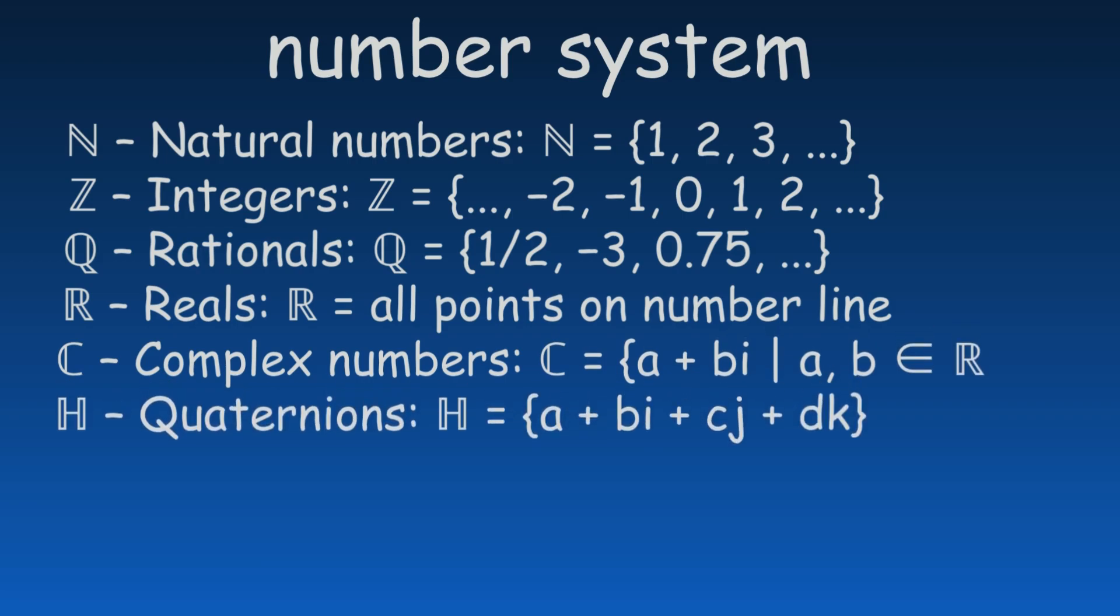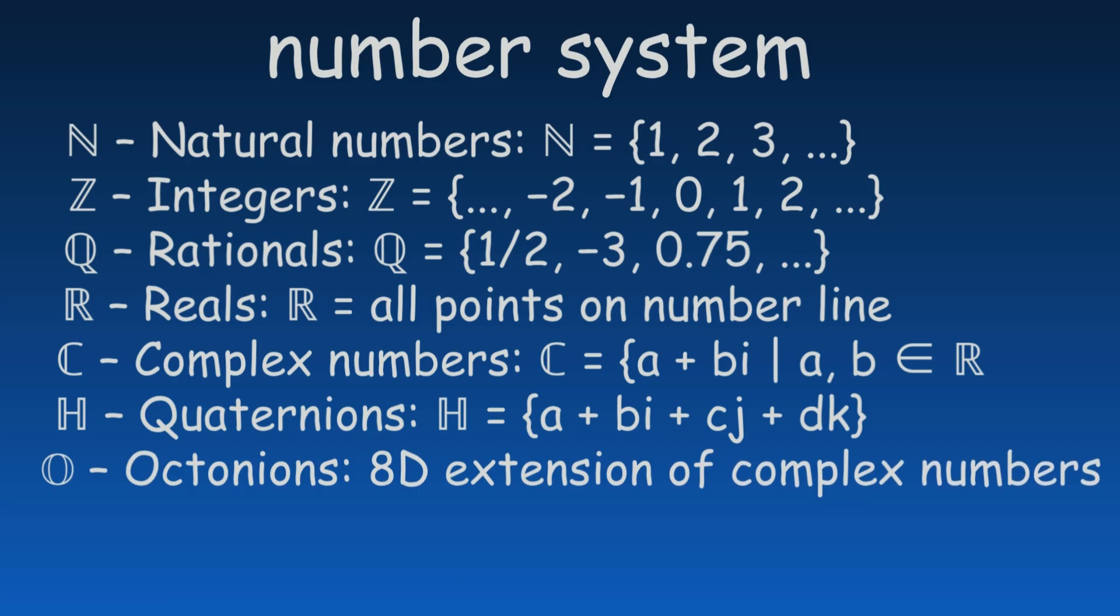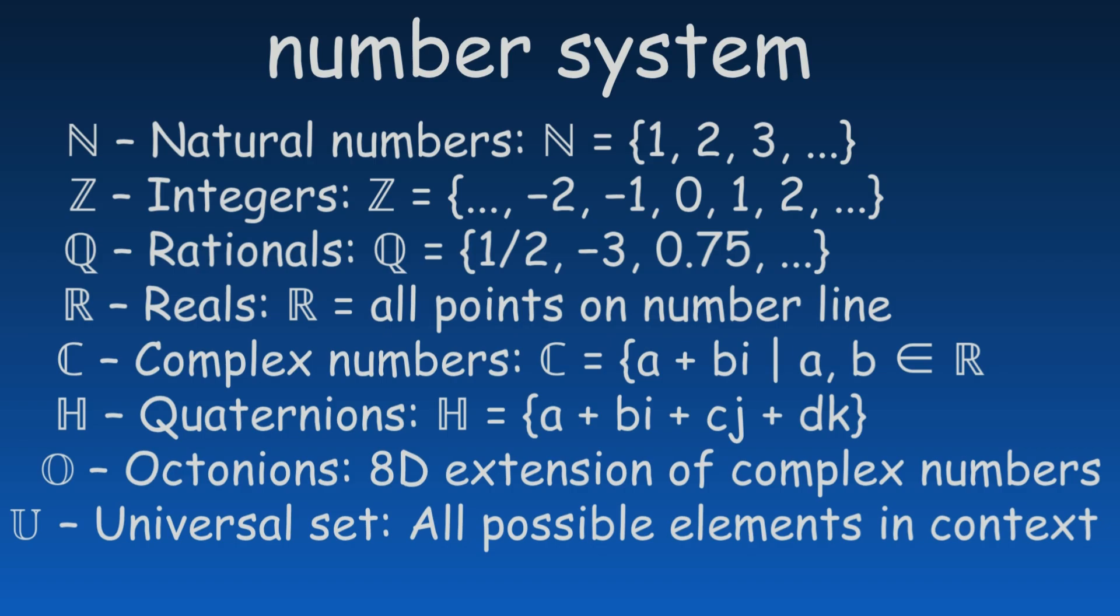H stands for the set of quaternions. O refers to the set of octonions. U is used to represent the universal set, which includes all possible values in a given context.